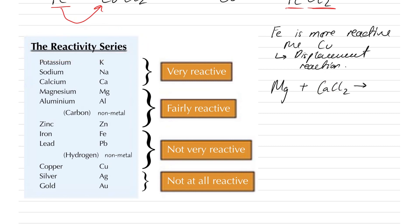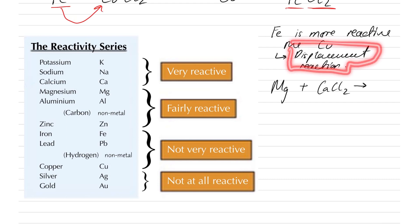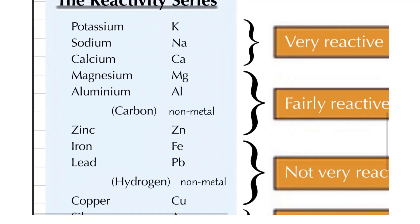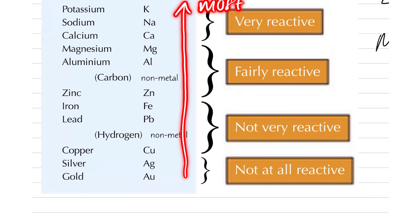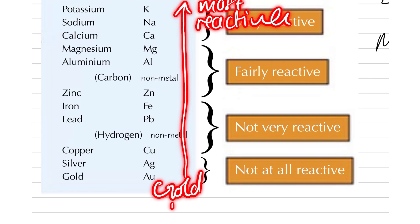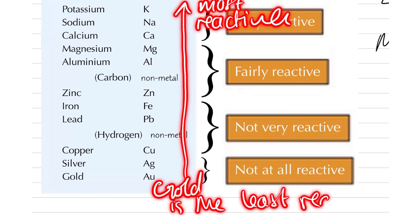Now, the reactivity series helps us check whether a reaction is feasible, and whether we can make that reaction happen via a displacement reaction. So, we look at the reactivity series. This is the reactivity series, where it suggests that potassium is the most reactive, and at the bottom, gold is the least reactive.